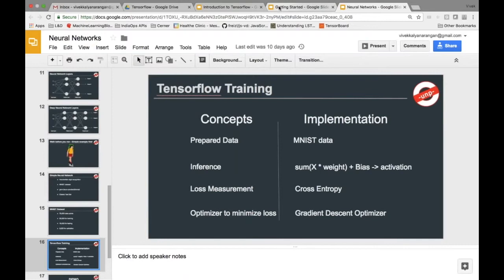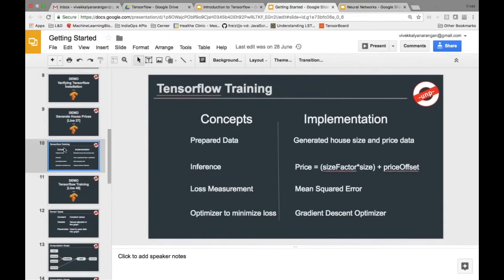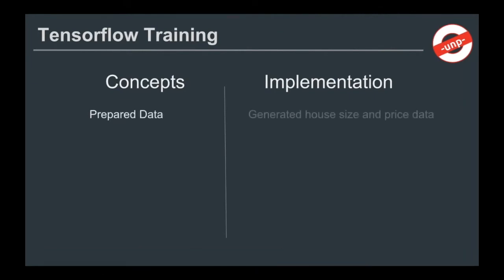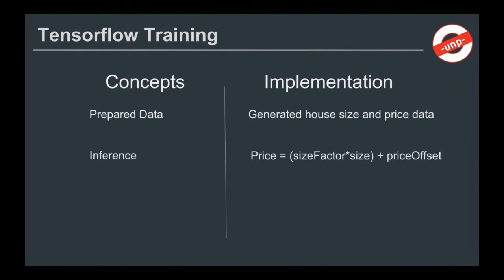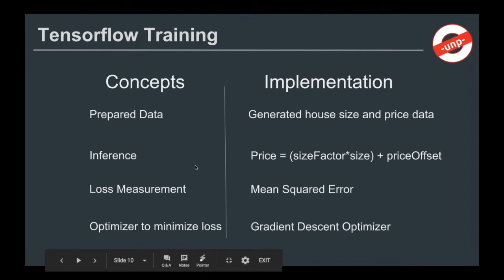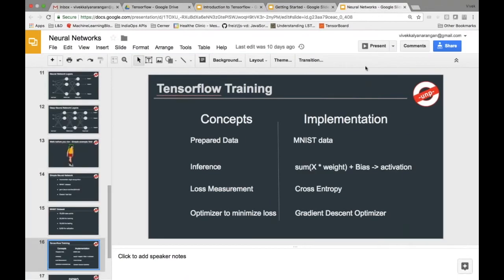Now it's a good time to go back to the concepts and implementation from the previous problem. Last session we went through these concepts and implementation. In a typical linear regression problem, the four cornerstones were: preparing the data (house size and house price), inference (simple linear regression), loss measurement (mean squared error), and the optimizer (gradient descent). These were the four cornerstones of concepts and corresponding implementation for linear regression.